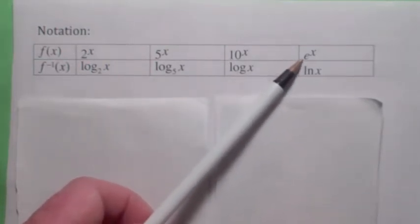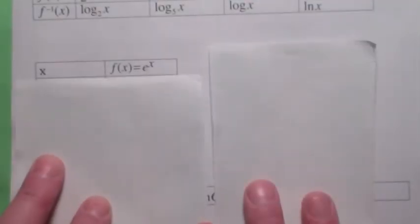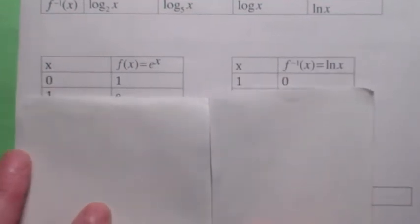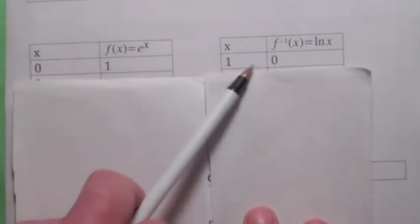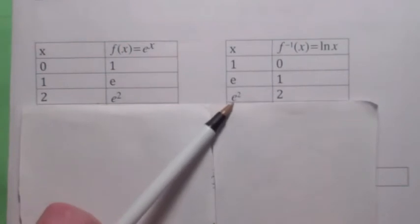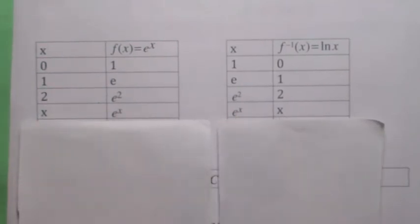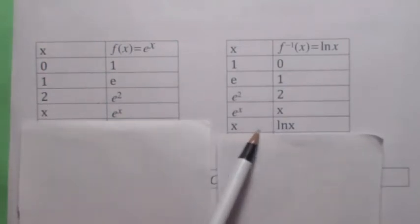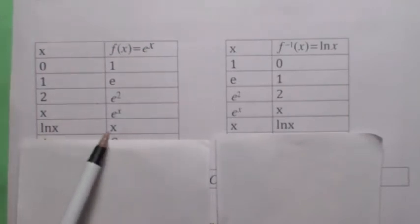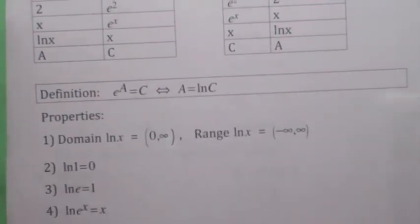Most importantly, if the exponential function is e to the x, the inverse is written as ln of x, which means the natural log of x. That means if e to the 0 is 1, the natural log of 1 is 0. If e to the 1 is e, the natural log of e is 1. If e to the 2 is e squared, the natural log of e squared is 2. If you give the exponential function x, it gives you e to the x, so the natural log of e to the x is x. Similarly, e to the natural log of x equals x. In general, if a goes to c on e to the x, then c goes to a on the natural log of x, meaning if e to the a is c, then the natural log of c equals a. All those properties are summarized here.